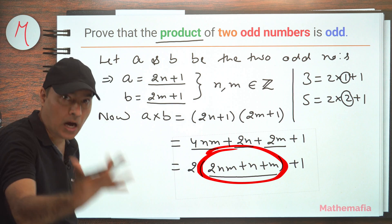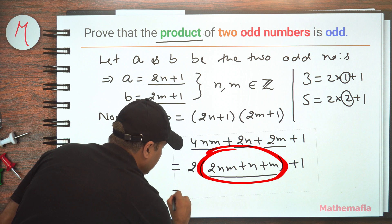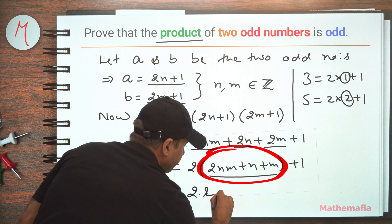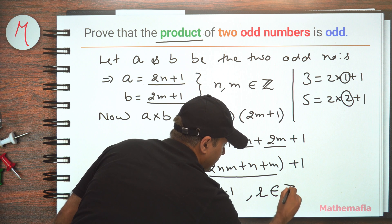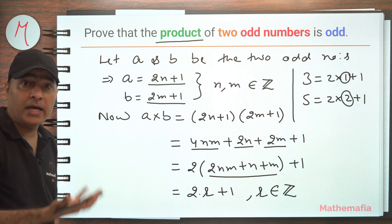So let's call it r. So if I call it r, this will be written as 2 times r plus 1, where r is an integer. So that's it.